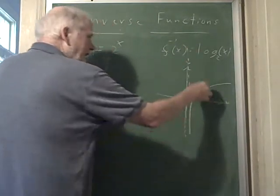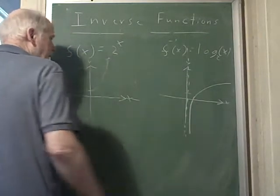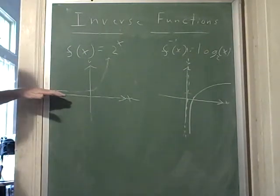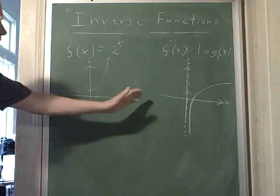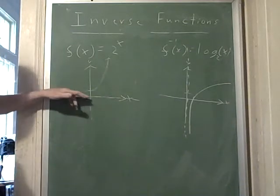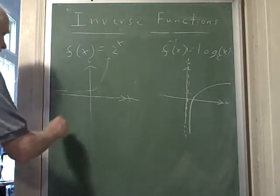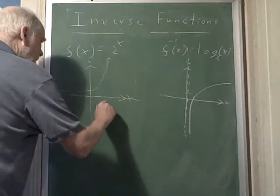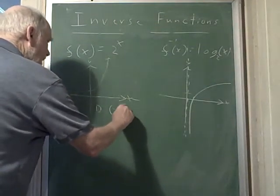It looks like this. It has a vertical asymptote. Notice that here the domain is negative infinity to infinity and the range is 0 to infinity. I should probably write that: domain negative infinity to infinity...